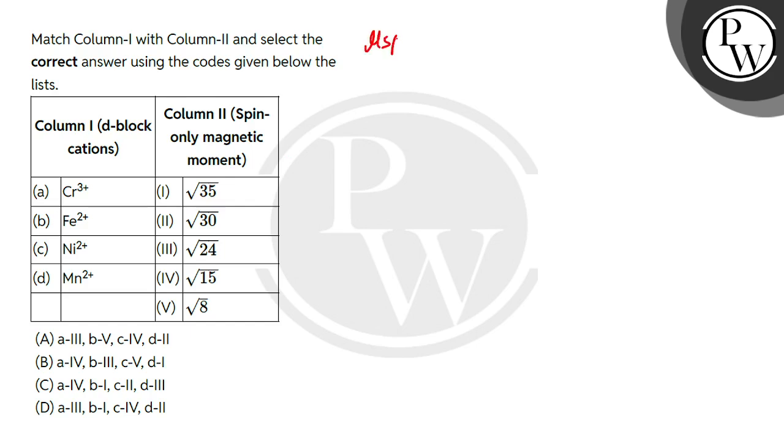So spin-only magnetic moment ka formula hota hai √(n(n+2)) unit, where n hota hai the number of unpaired electrons present in the d-orbital.